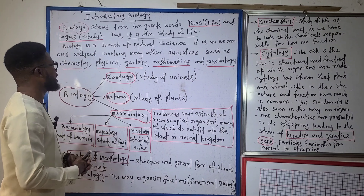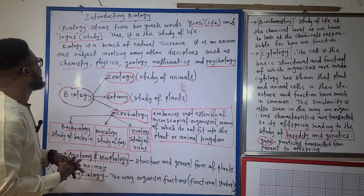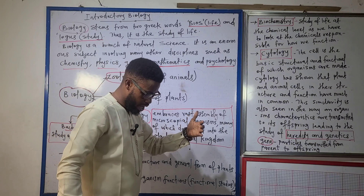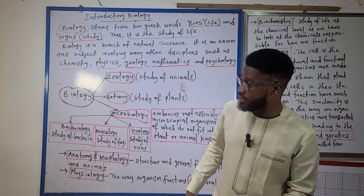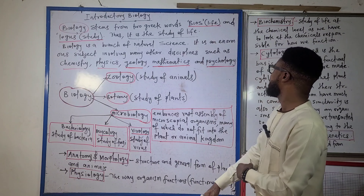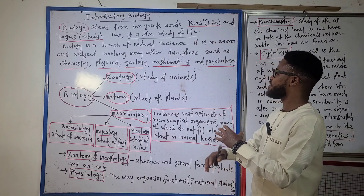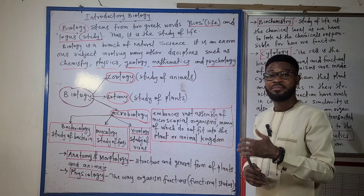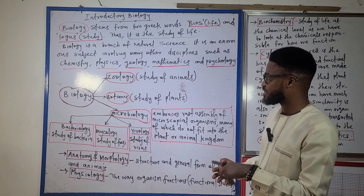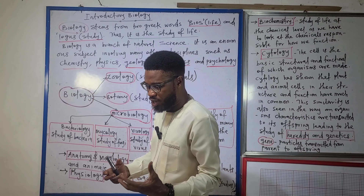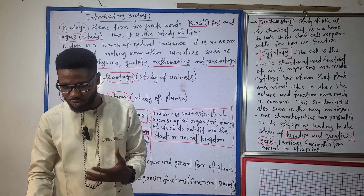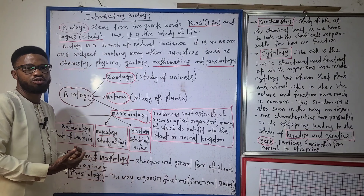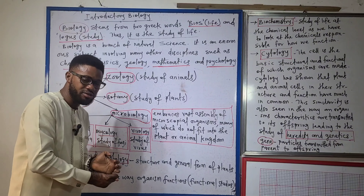Conventionally, biology is a branch of natural science, the other two being chemistry and physics. Biology is a very wide subject. It involves many other disciplines such as chemistry — you want to talk about those chemicals that keep you alive, so there is no way you're not going to talk about chemistry.